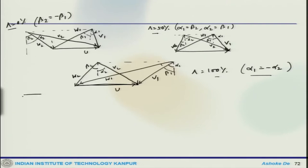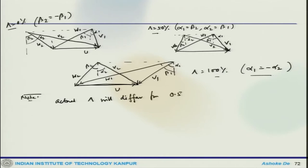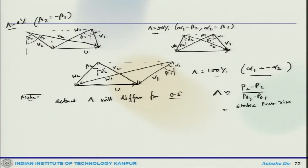Another thing to note here is that we have assumed reversible work done in the stage, so the work done factor is unity. But due to the presence of irreversibilities, the actual degrees of reaction will differ from 0.5. For an axial compressor stage in which the change in density is small, psi would be approximated as P2 minus P1 divided by P03 minus P01, which is essentially the static pressure rise in the rotor divided by the stagnation pressure rise in the whole stage.